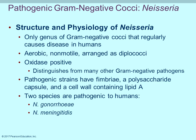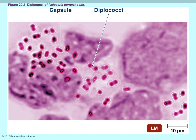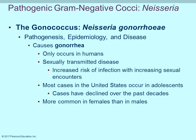We'll go through different genera one by one, discussing structure, physiology, and diseases. The first is the cocci — the only gram-negative cocci typically causing disease in humans is the genus Neisseria. It is typically a diplococcus, meaning two cells together, kidney-shaped, non-motile, aerobic, and oxidase positive. The oxidase test can distinguish it from other gram-negative pathogens. The two main species are Neisseria gonorrhoeae and Neisseria meningitidis. These bacteria occur in pairs and have a capsule that provides an extra virulence factor, protecting against phagocytosis.